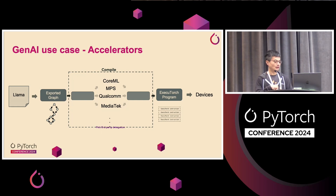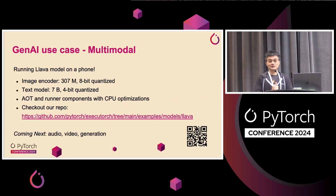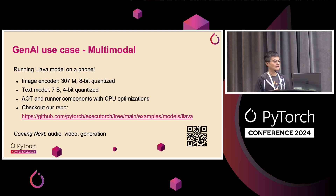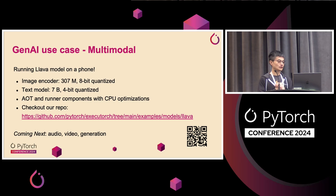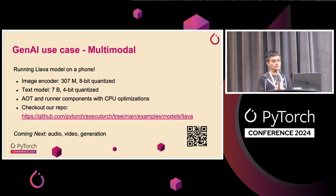We are also supporting multimodals. Mergen just showed the live video in the previous slide. In the demo booths, you can also try running the LLaVA model with both image and text as inputs. The image encoder has 300 million parameters quantized in 8-bit, and the text model has 7 billion parameters quantized with 4-bit quantization. Both the AOT and runner components with CPU optimizations are already landed in our repo. We built our software stack on top of the ExecuTorch core with all the necessary components for multimodal, so you can use all the components and compose them.